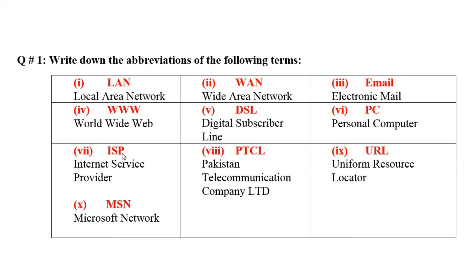Number seven is ISP — ISP stands for Internet Service Provider. Eighth one is PTCL — Pakistan Telecommunication Company Limited, you can write Ltd. Ninth one is URL — URL stands for Uniform Resource Locator. Last one is MSN — MSN stands for Microsoft Network.